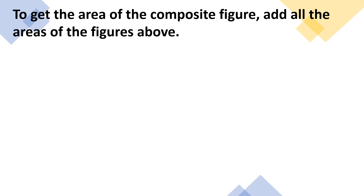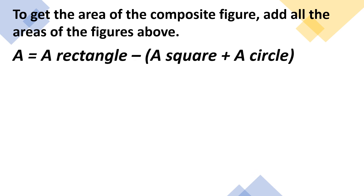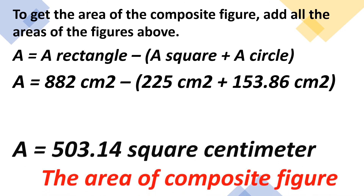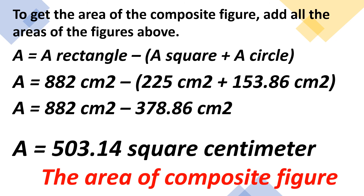To get the area of the composite figure, add the area of the square and the area of the circle, then subtract from the area of the rectangle. The area of the rectangle is 882 square centimeters. The sum of the square and circle areas is 225 plus 153.86, which equals 378.86 square centimeters. Subtracting from 882, we get 503.14 square centimeters, which is the area of the composite figure.